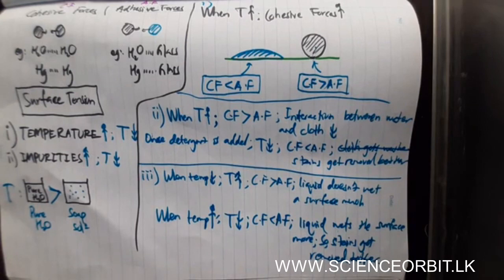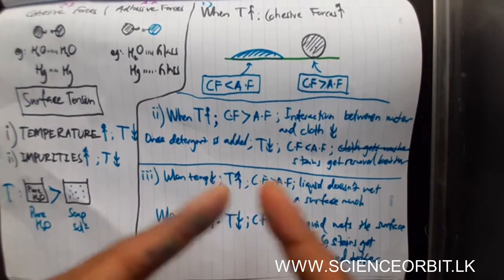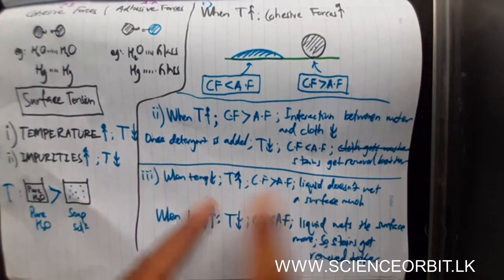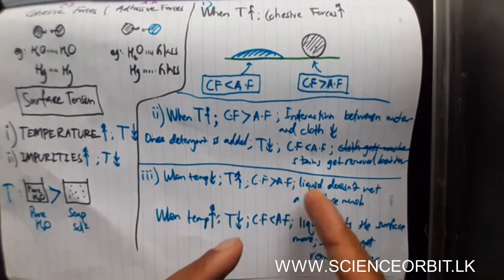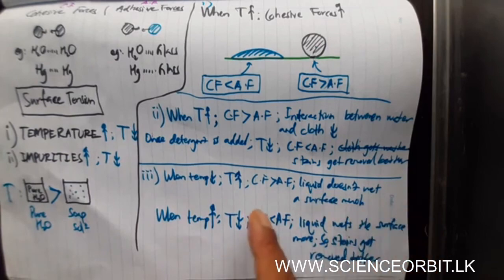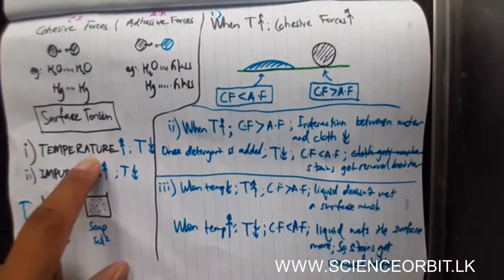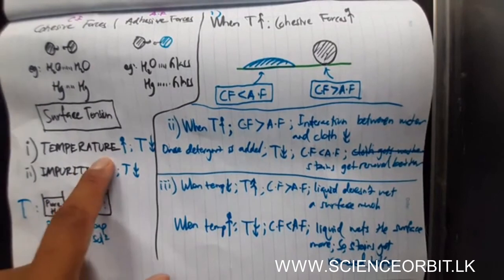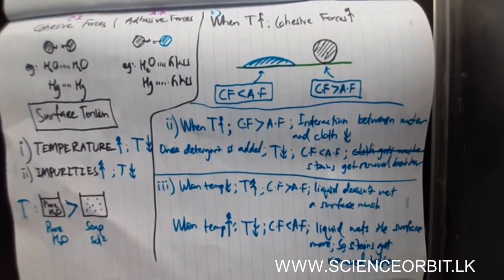Summary: when surface tension is high, interaction between liquid particles is more, so interaction between liquid and cloth is less, and stains won't be removed. To remove stains, you need to reduce the surface tension. You can do this in two ways: increasing the temperature by using hot water, or increasing the amount of impurities by adding soap or detergent.